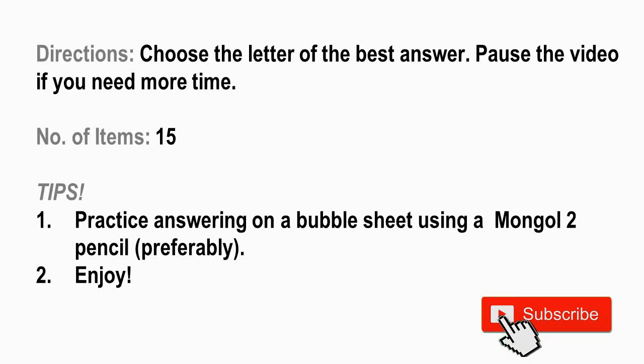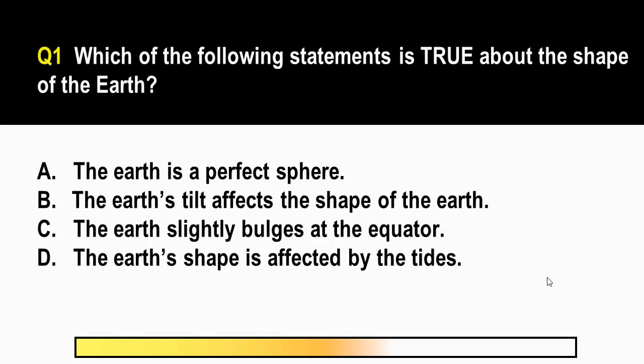For question number one, which of the following statements is true about the shape of the earth? A. The earth is a perfect sphere. B. The earth's tilt affects the shape of the earth. C. The earth slightly bulges at the equator. D. The earth's shape is affected by the tides.